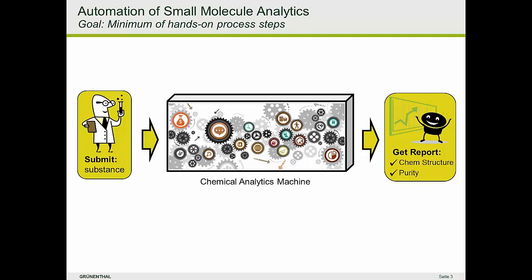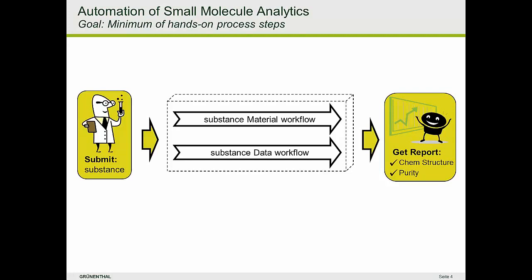In a perfect world, the synthetic chemist or the substance handling colleague would just submit the substance to that chemical analytics machine and get immediately a report about whether the chemical structure is correct or incorrect, and secondly about the purity of the sample, whether it meets a minimum requirement or not. Automating that chemical analytics process requires thinking about two workflows: the substance material workflow and the substance data workflow.